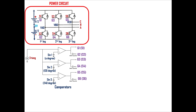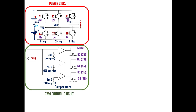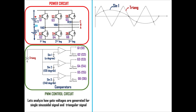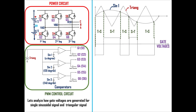Here is the overall power circuit with six switches and the PWM control circuit which generates the gate voltages for all six switches. To understand the operation, let's analyze how gate voltages are generated for a single sinusoidal signal and triangular signal. The sinusoidal signal is given to the positive input of the comparator and the triangular signal to the negative input. So if the sinusoidal signal is greater than the triangular signal, the PWM control circuit will generate positive gate voltages.